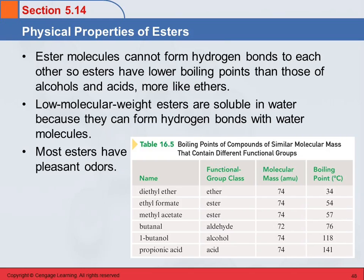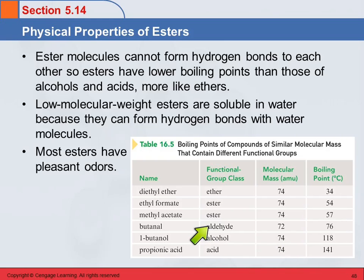And then we've got alcohols — alcohols can hydrogen bond with each other, so here's 118. Then we've got the aldehydes. Can aldehydes hydrogen bond with each other? No, because you've got that carbon double bond oxygen; the oxygen is only bound to carbon. They've got some polarity to them, which increases their boiling points and melting points, but they can't do hydrogen bonding.